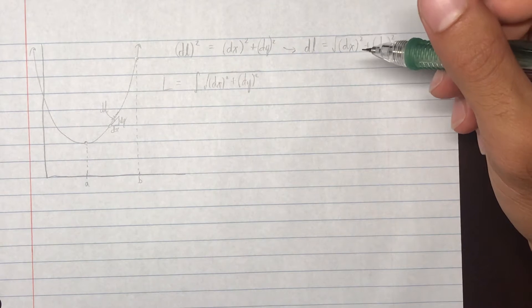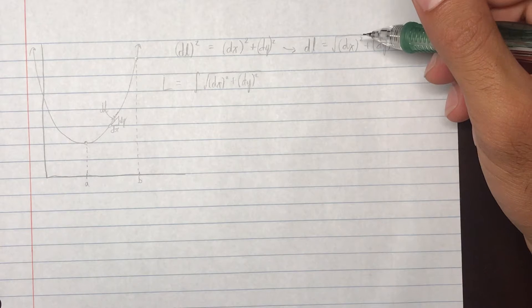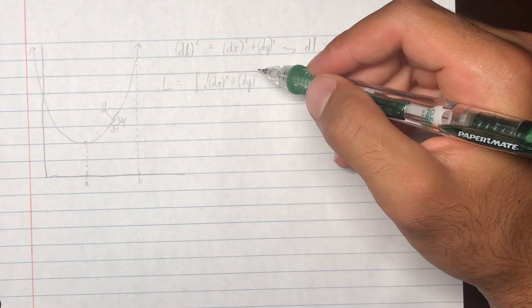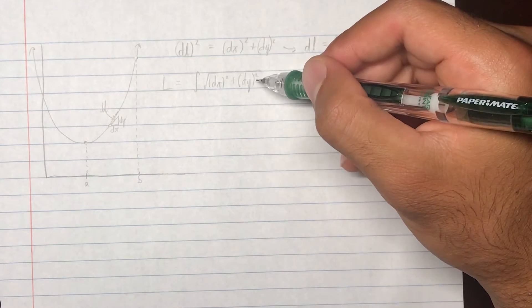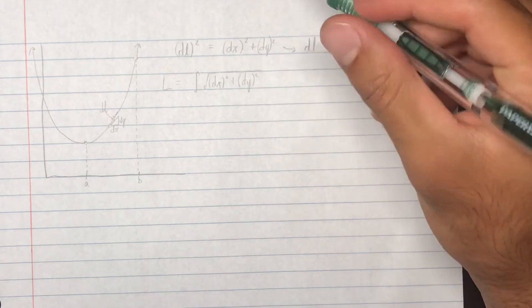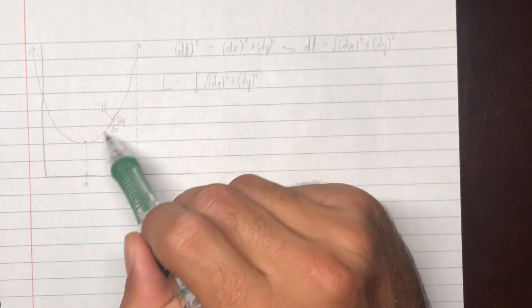Okay, so, what we're going to do is we're actually going to factor out a dx squared. And obviously, you can factor out a dy if the function you're dealing with is with respect to y. But, it's more convenient to factor out a dx in this case.